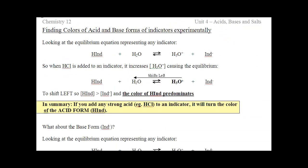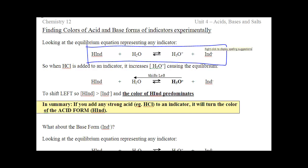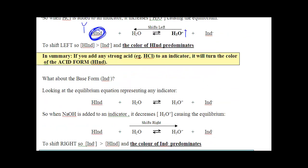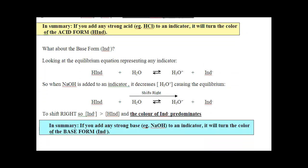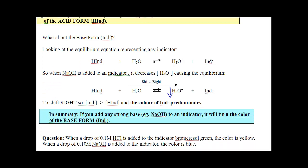How do you shift the equilibrium left or right? Here is our overall indicator: HIND and IND minus. If we add an acid, we increase the concentration of H3O+, it's going to shift left to undo our change, and the acid form is going to dominate — maybe it's yellow. To shift it right, I need to add a base. When I add a base, H3O+ decreases in concentration, equilibrium shifts right to make more IND minus, which will be red. So when you add a base, it turns red.